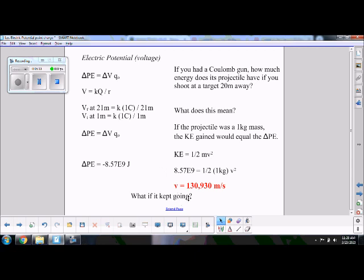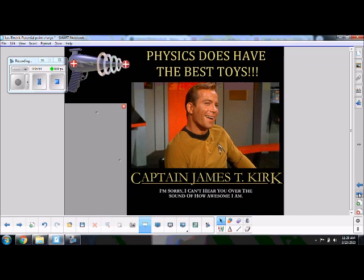What if it kept going? Well, it still has some potential energy left. It's got 9 times ten to the nine minus this. So it's still going to have some potential. And that will also go to kinetic. It'll end up with a final kinetic energy of 9 times ten to the nine. We can plug that into our 1.5 mv squared and find the final velocity, which is going to be a little bit faster than that. But not a huge amount more.